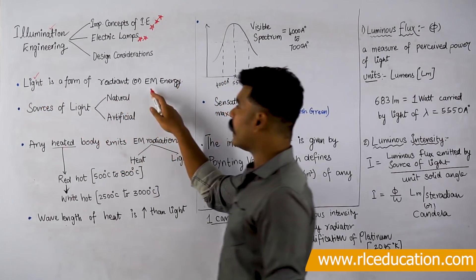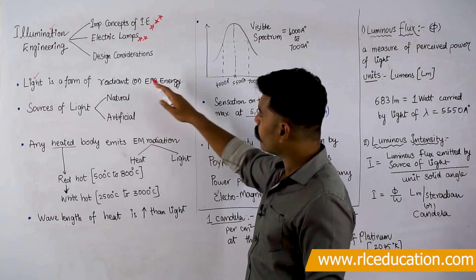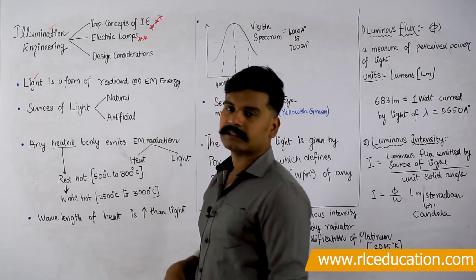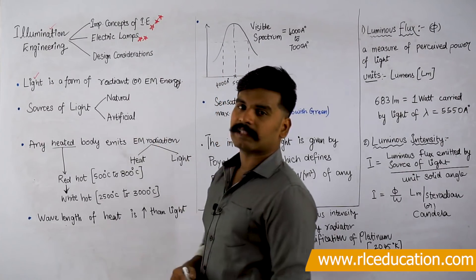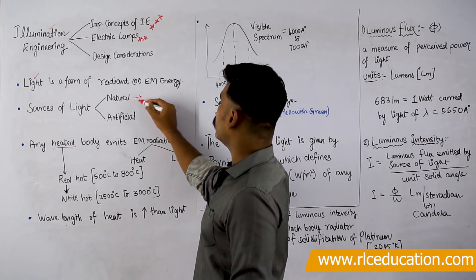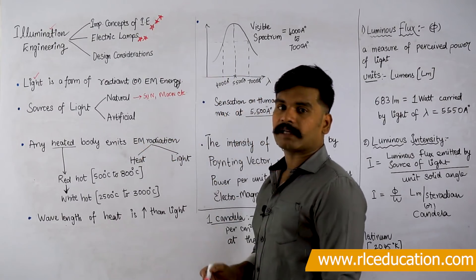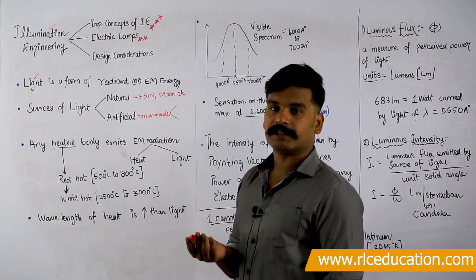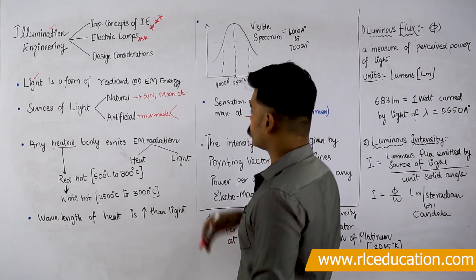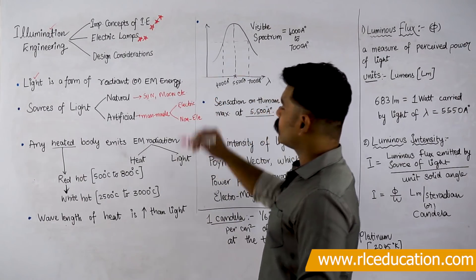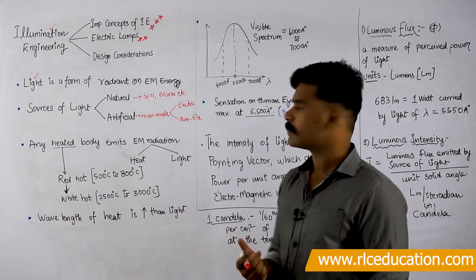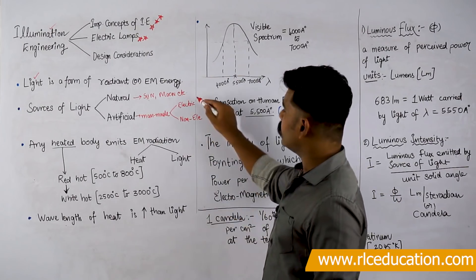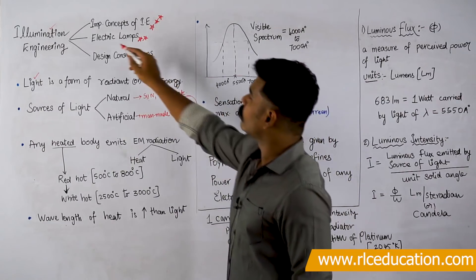Illumination is the effect of light, which is the cause. Basically, light is a form of radiant or electromagnetic energy. Sources of light can be classified as natural sources — like the sun, moon, or any heavenly bodies — and artificial sources, which are manmade. Artificial sources may be electric or non-electric. Electric sources are called electric lamps, while non-electric sources include oil lamps, lanterns, and so on.